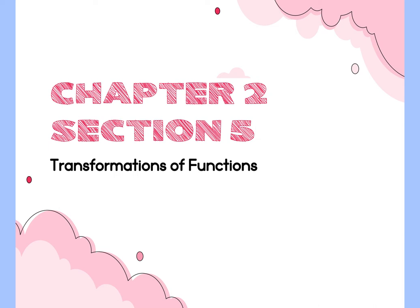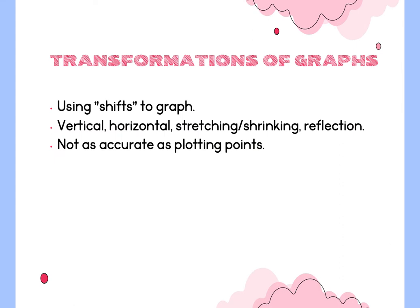Section 2.5 is transformations of functions. We're going to take all those parent functions and start to move them around without having to plot every point — there will be one exact starting point, and the rest is an approximation. We'll use shifts up, down, left, and right to move the graphs, stretching and shrinking to make them more narrow or wide, and reflection to flip them upside down. This is less accurate than plotting points but is the easiest way to get an approximation.